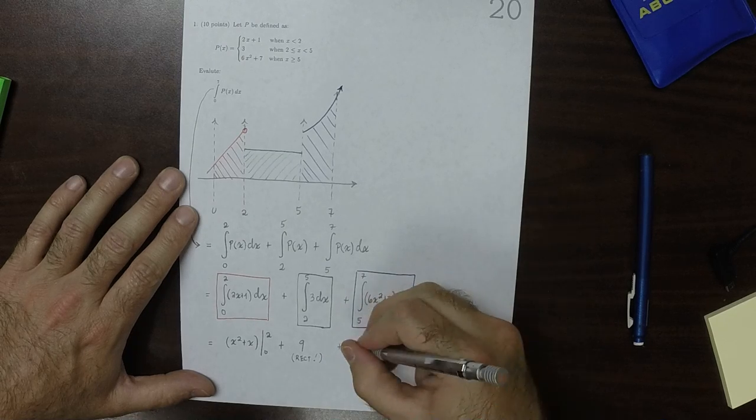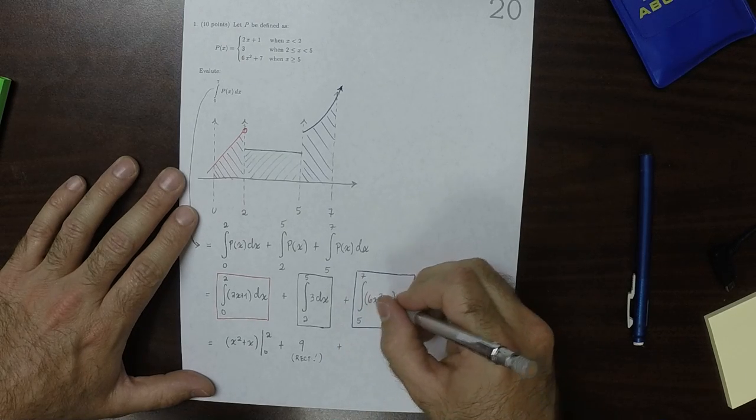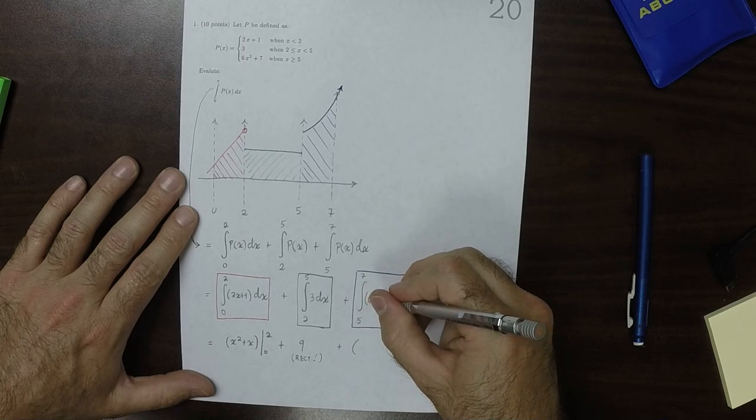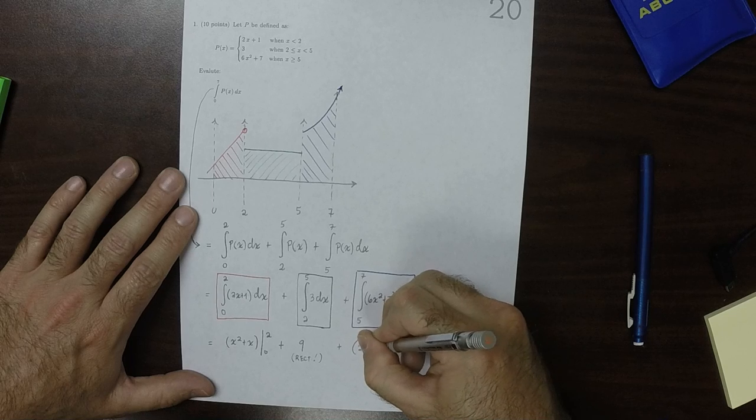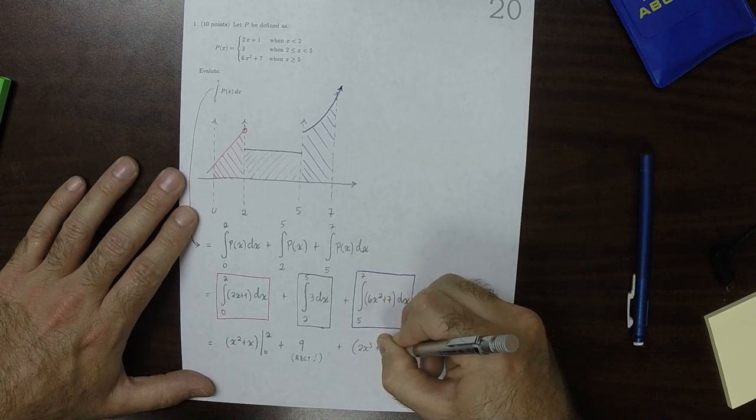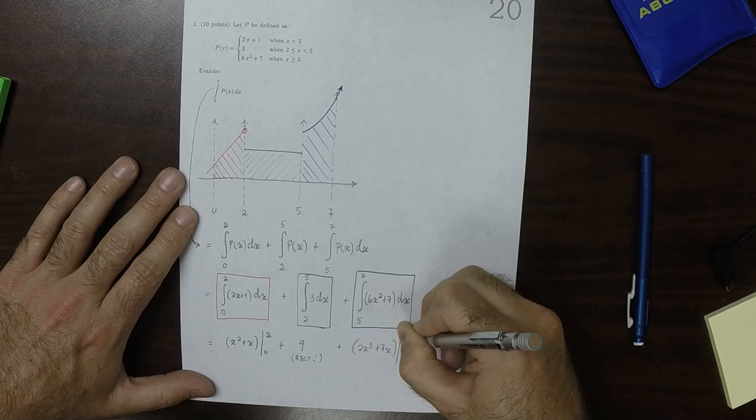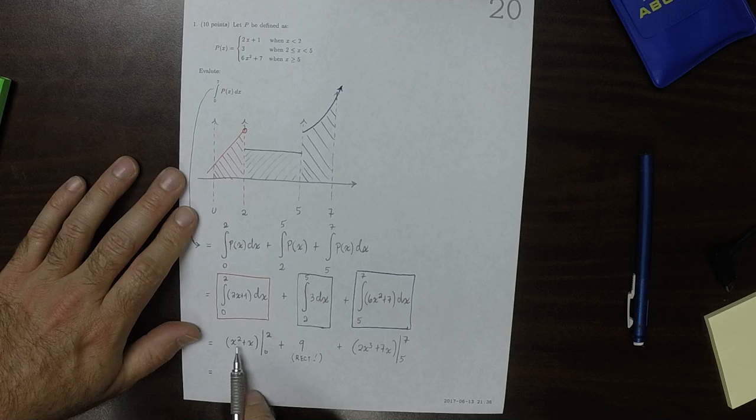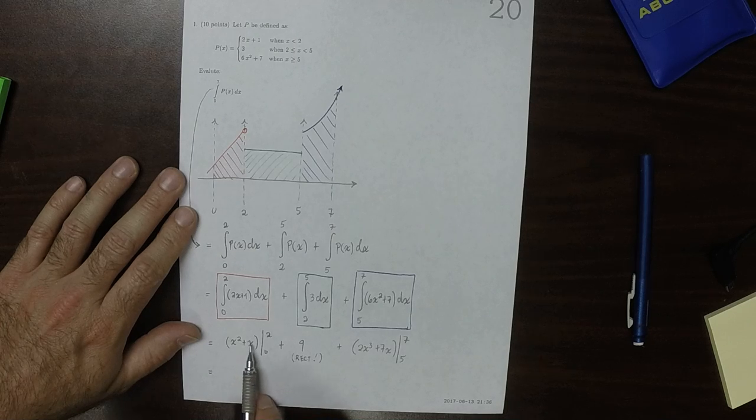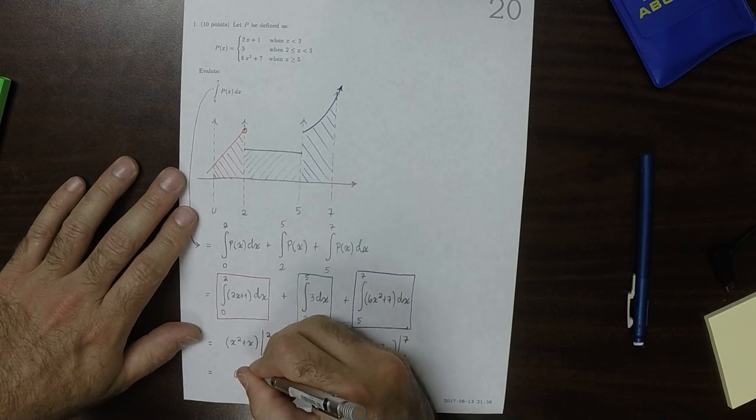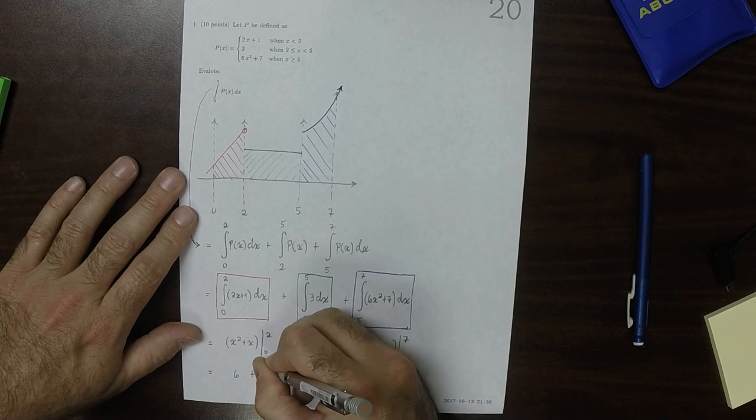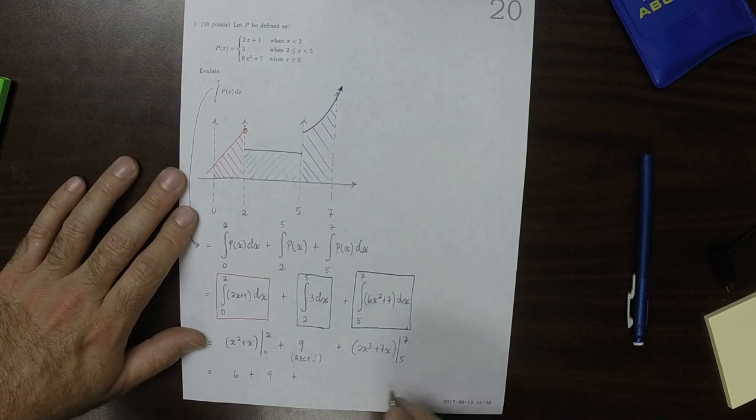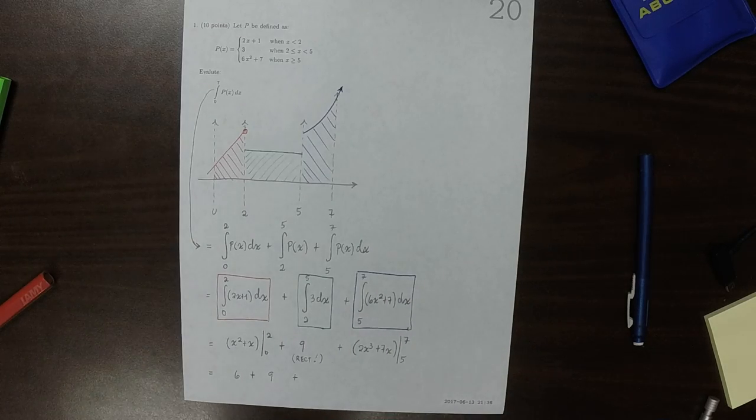And then plus, well, the anti-derivative of that would be 2X cubed and then plus 7X. And we'll need to evaluate that from 5 to 7. So it's nice that we're plugging in 0 because that makes that easy. So that'd be 4 plus 2 is 6. So that'd be 6 plus 9 plus, now that's going to require a little bit of work there.